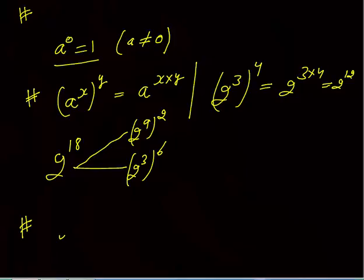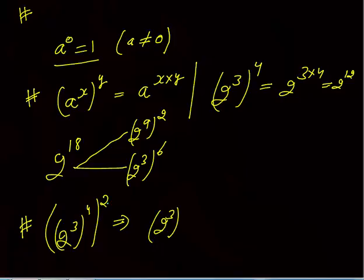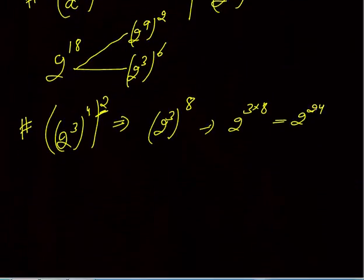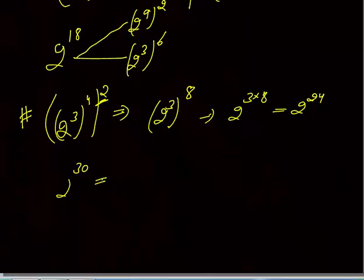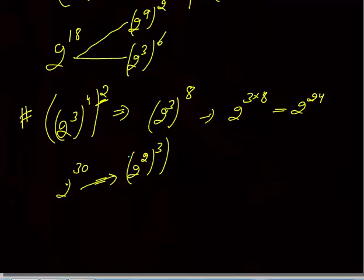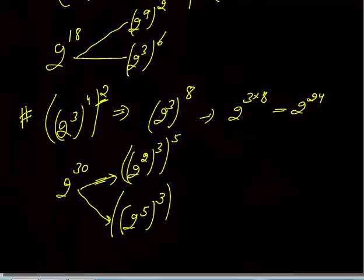Now, if I write 2 raised to the power 3, raised to power 4, raised to power 2 — there are two brackets. First open the larger one: 4 into 2 gives 8, so the inner part becomes 3 raised to power 8, then 3 into 8 gives 2 raised to power 24. Conversely, if 2 raised to power 30 is given, you can write it with two brackets as 2 raised to power 2, raised to power 3, raised to power 5, since 2 into 3 is 6, and 6 into 5 is 30. Or as 2 raised to power 5, raised to power 3, raised to power 2, since 5 into 3 is 15 and 15 into 2 is 30.